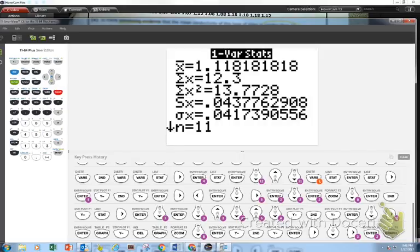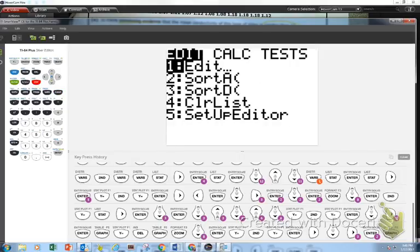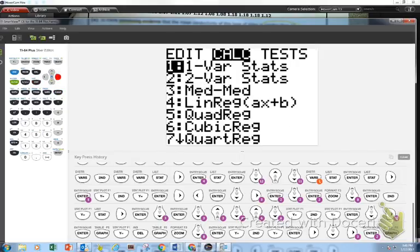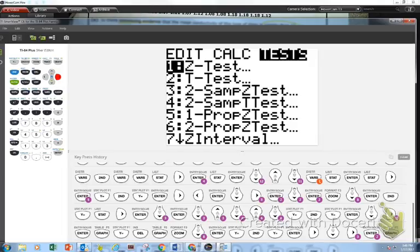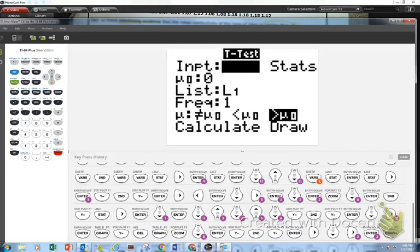Now, I'm going to go to stat, go over to test, and remember I'm going to go down to t-test. They don't say one-sample here. They just show t-test. And I'm going to press enter.